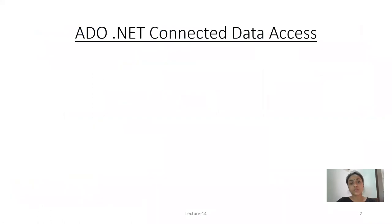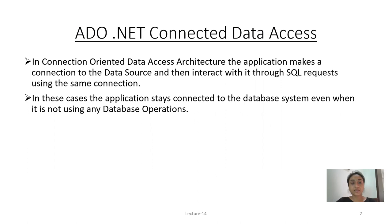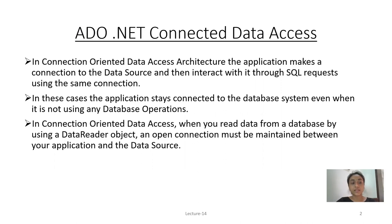First of all we will see what is ADO.NET Connected Data Access. In connection-oriented data access architecture, the application makes a connection to the data source and then interacts with it through SQL requests using the same connection. The application stays connected to the database system even when it is not using any database operations. When you read data from a database using a data reader object, an open connection must be maintained between your application and the data source.